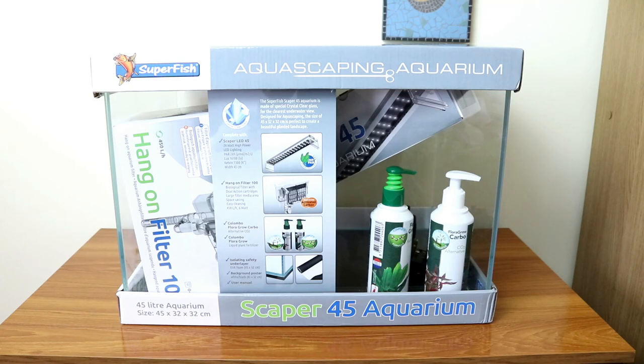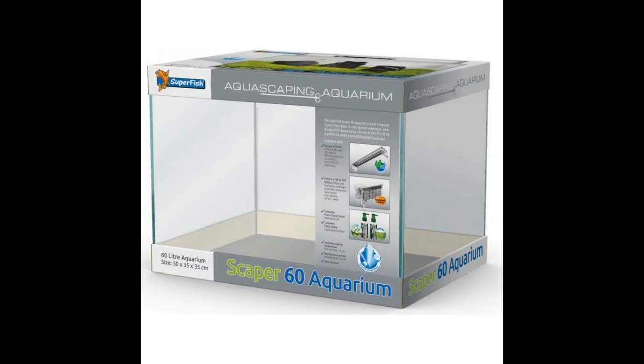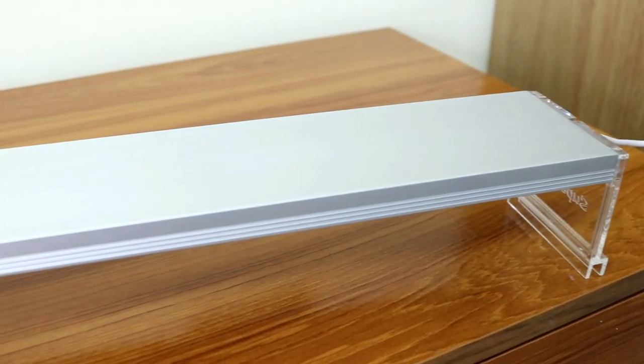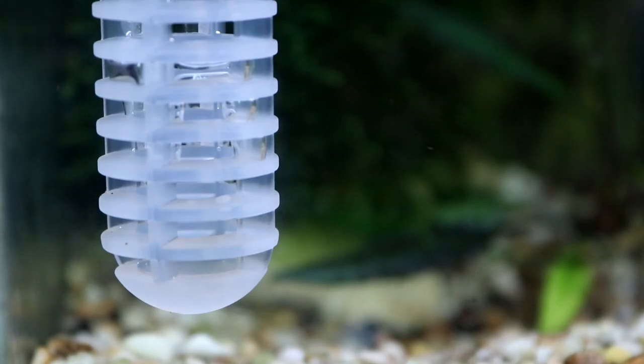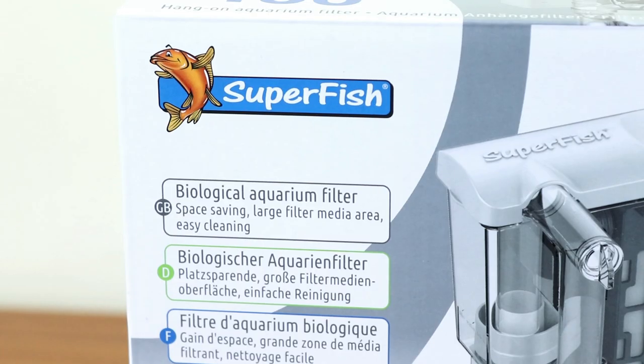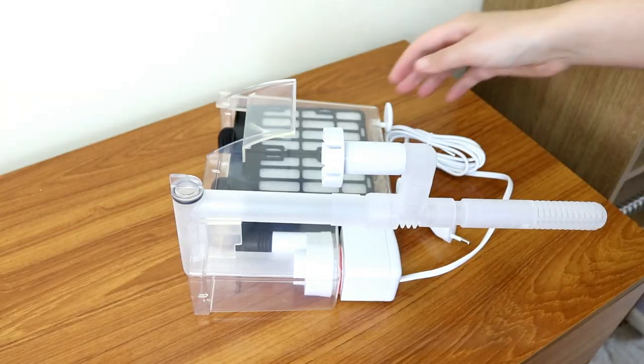This is the Superfish Scaper 45, the smallest in the series as there is a 60 and a 90 liter version as well. In this review we're going to be taking a look at what you get in the box, the quality of the kit, its styling and suitability, and lastly whether or not it's worth the price. At least, in my opinion.